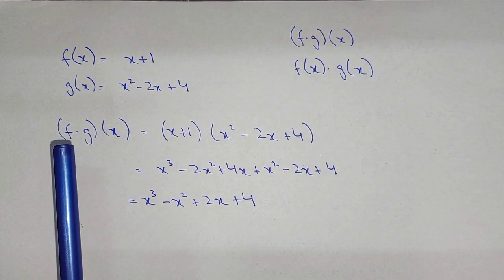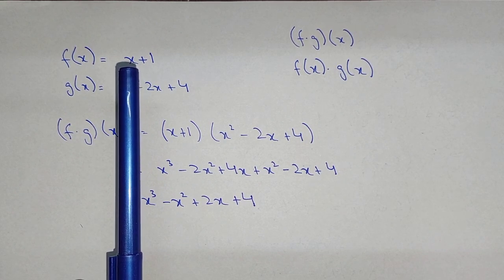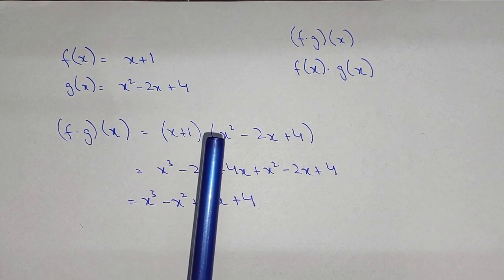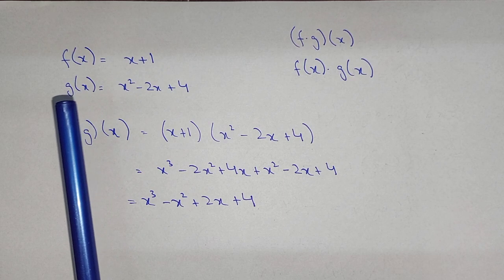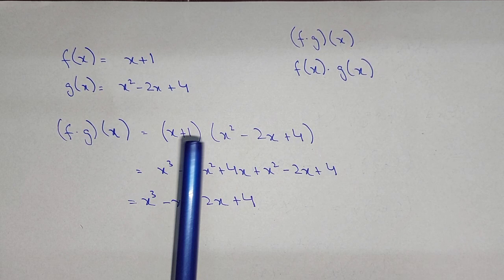So f times g of x equal to the values of f of x, that is x plus 1, times the value of g of x, x square minus 2x plus 4. So you can simplify it.